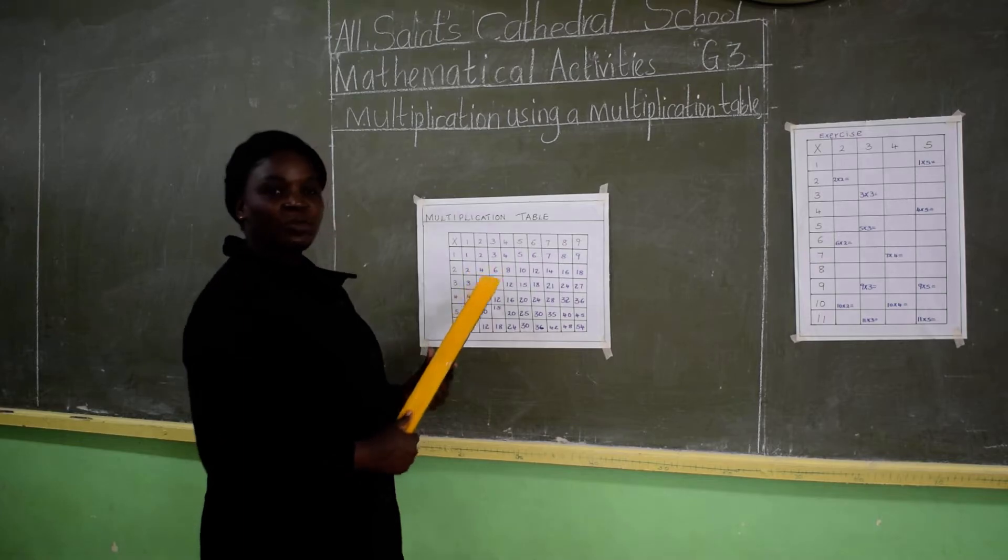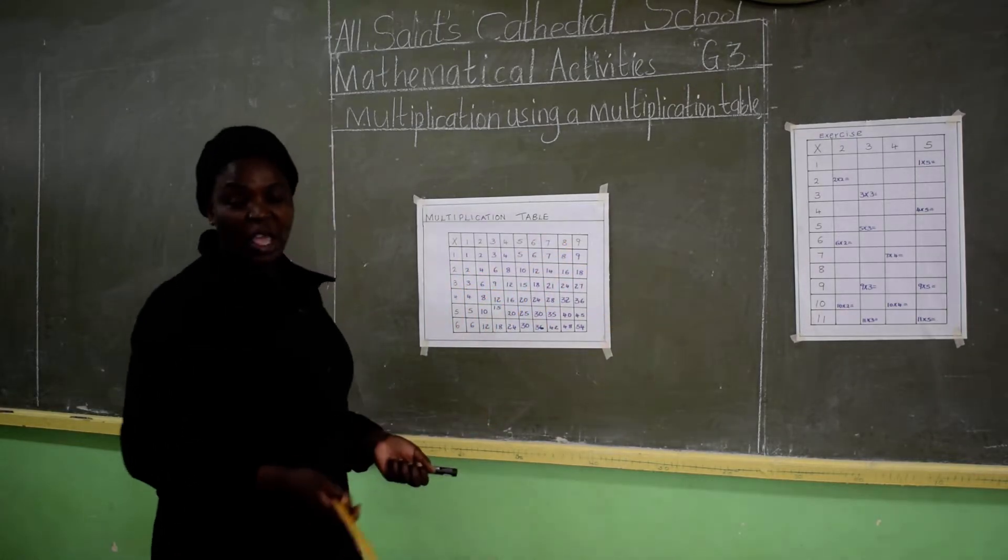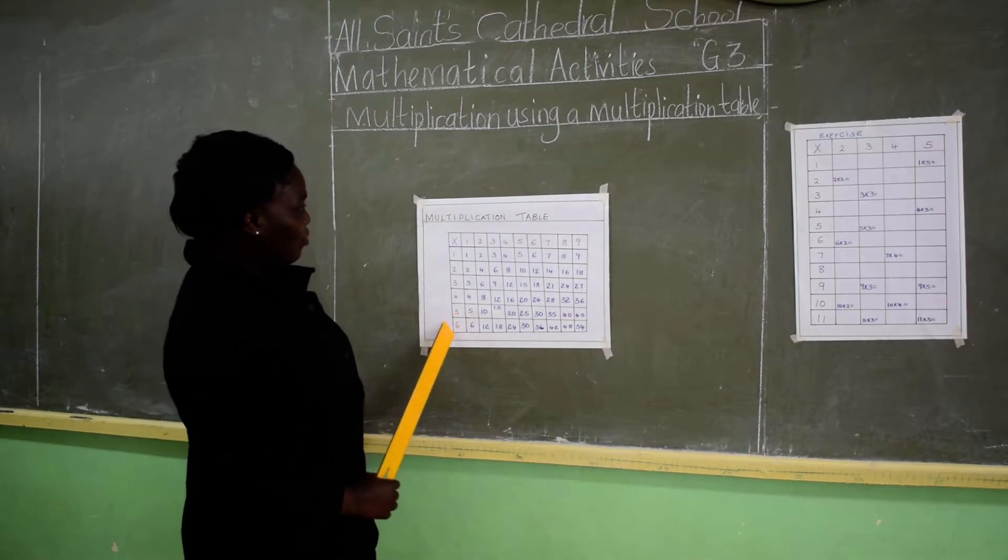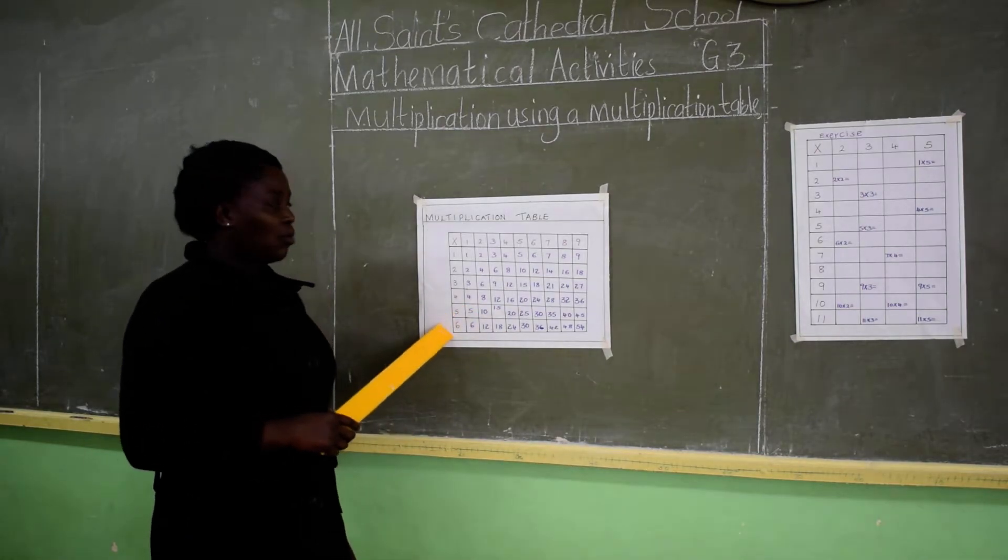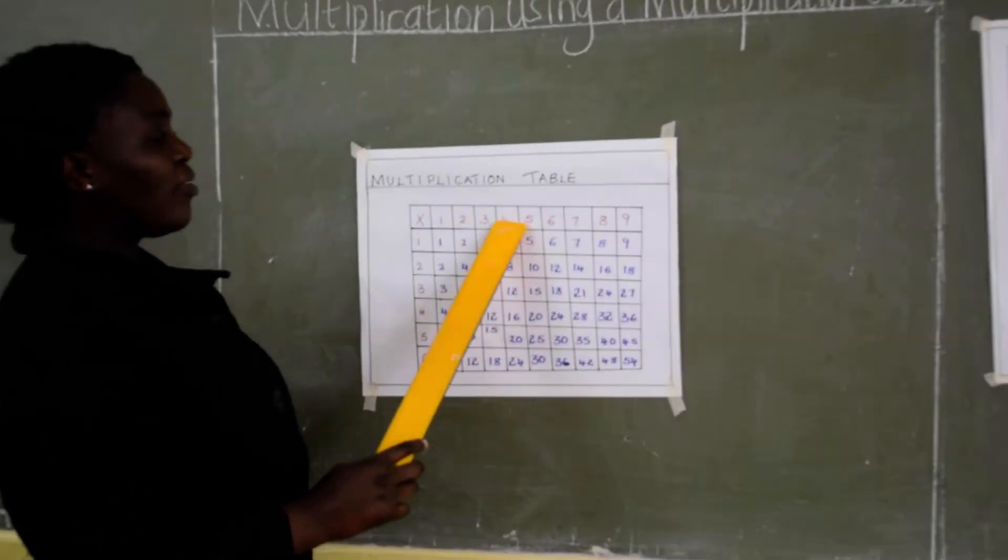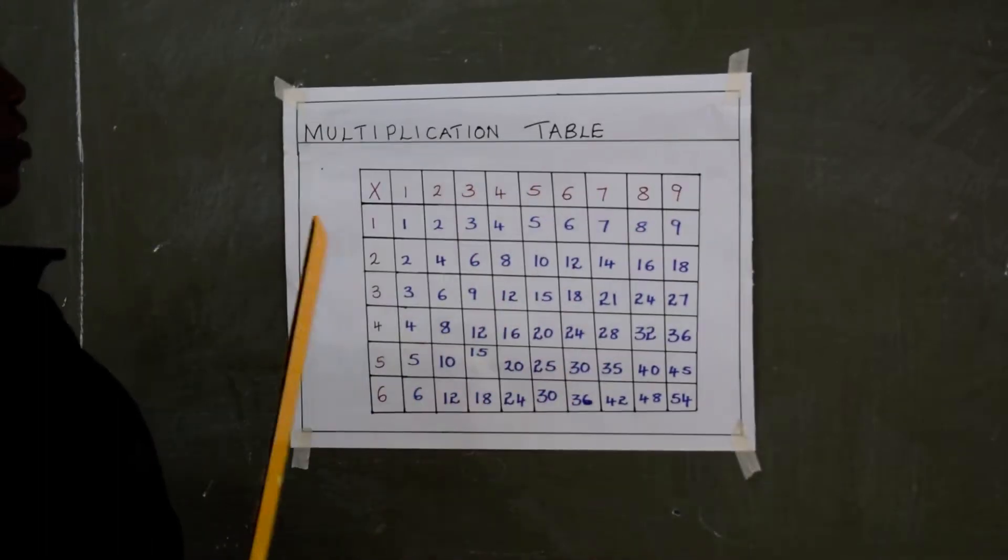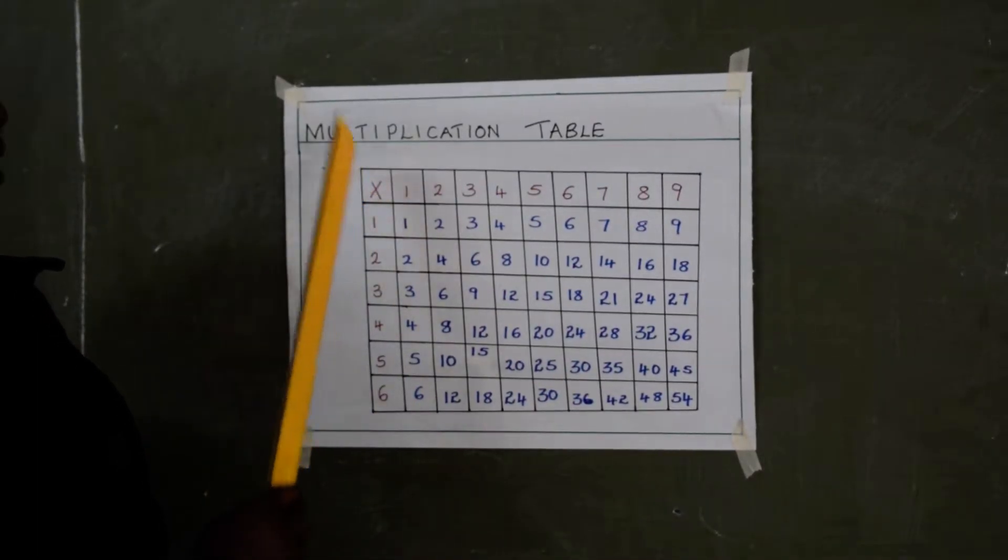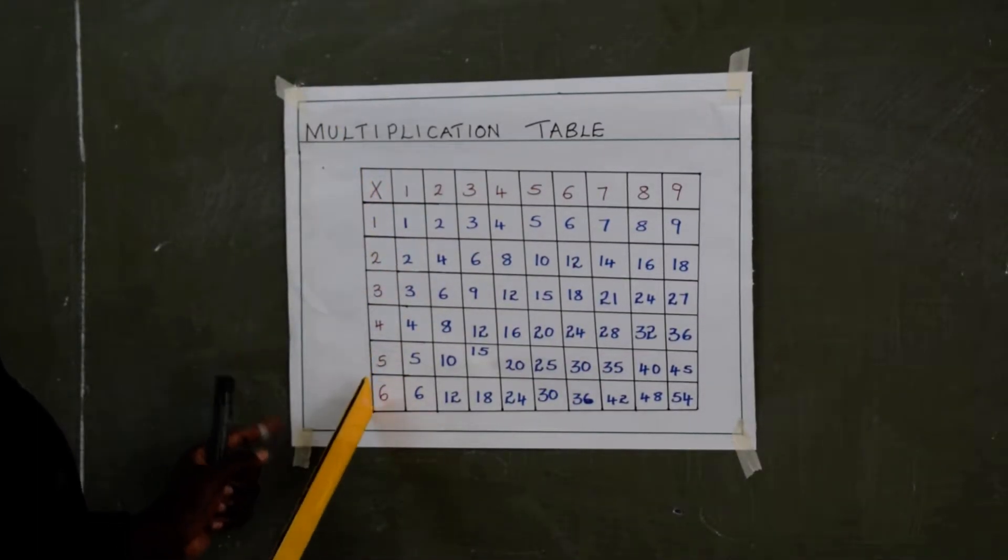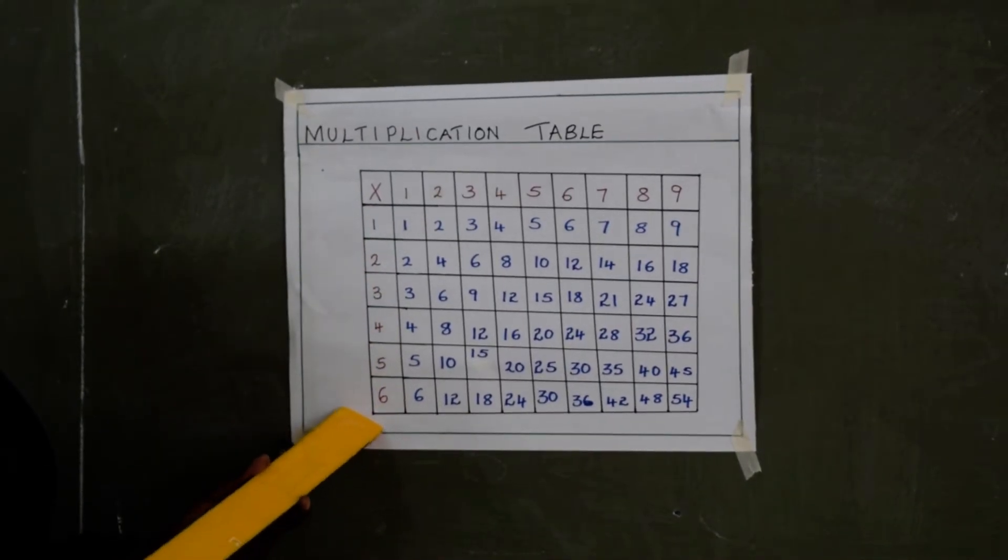Here I have a multiplication table. It can be a square or a rectangle. But for my case I have a rectangle. And as you can see on the upper side there are numbers from number 1 up to number 9. And then there is a multiplication sign here. Then on the far left there is also the numbers from number 1 up to number 6.